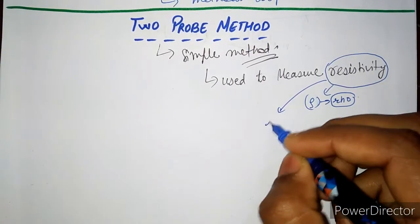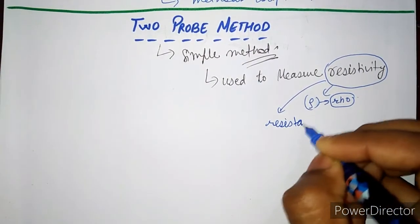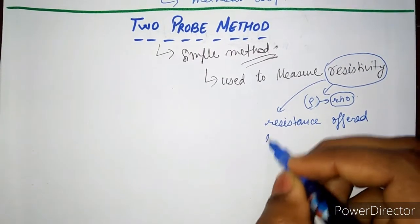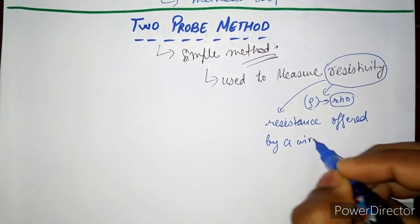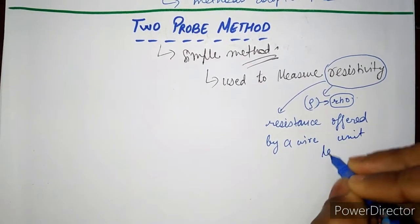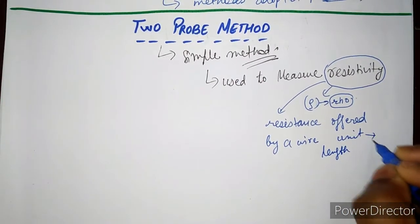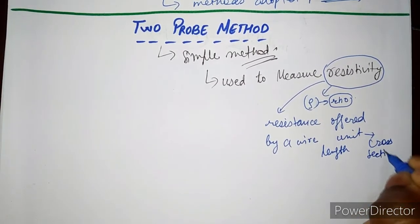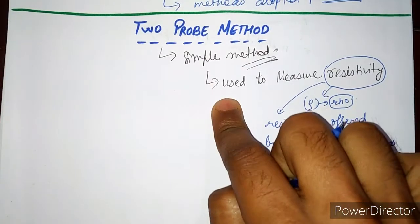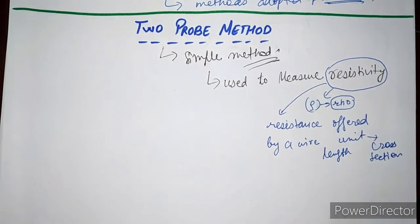What is resistivity? It is the resistance offered by a wire of unit length and unit cross-section area. So this is resistivity and this method is used to measure the resistivity of a material.